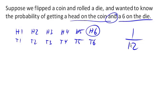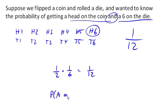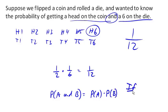You might also notice that the probability of getting a head on the coin is 1/2, and the probability of getting a 6 on the die is 1/6. If we multiply those, we get 1/12. It turns out that the probability of both events happening is the probability of A times the probability of B, if A and B are what's called independent.